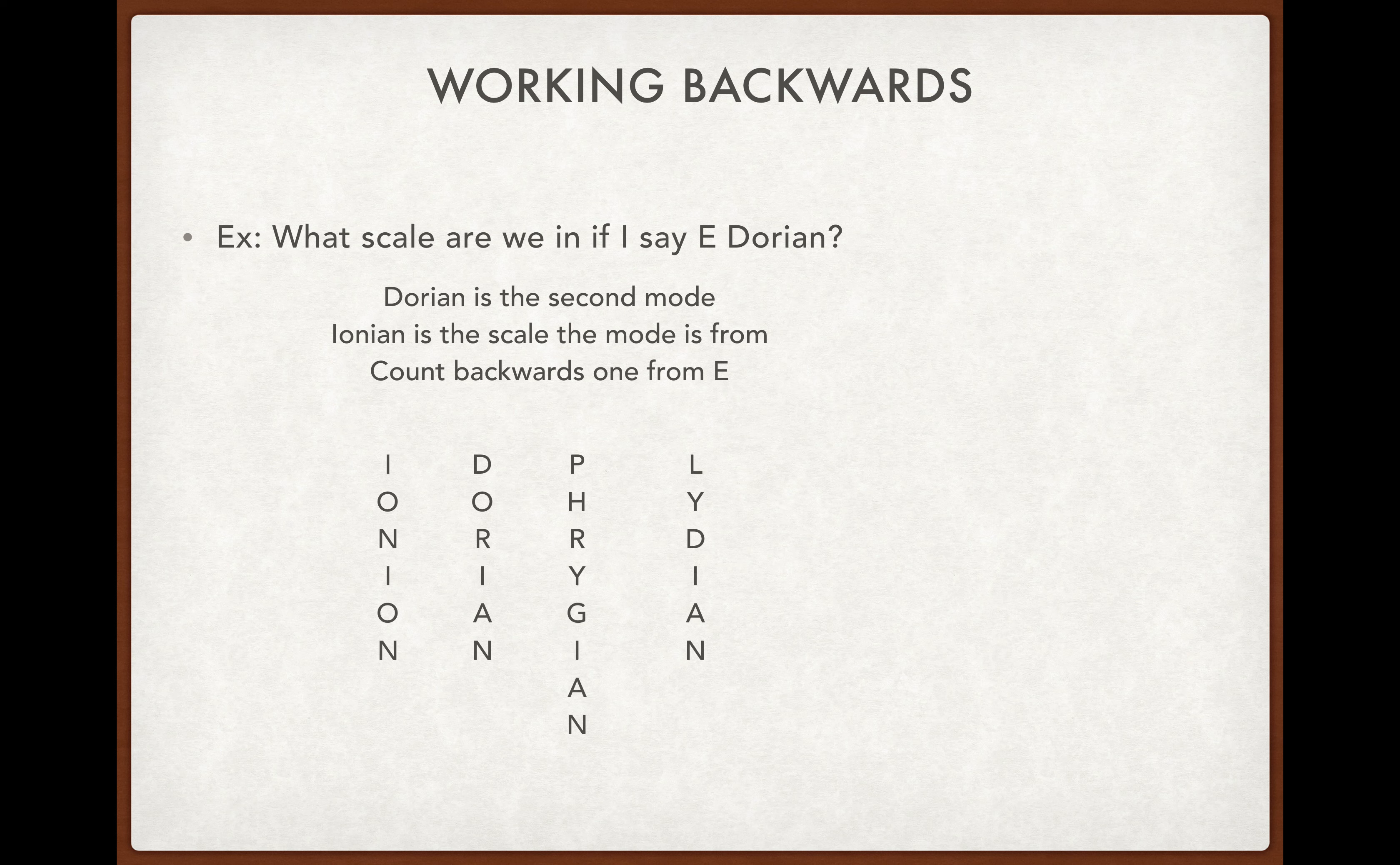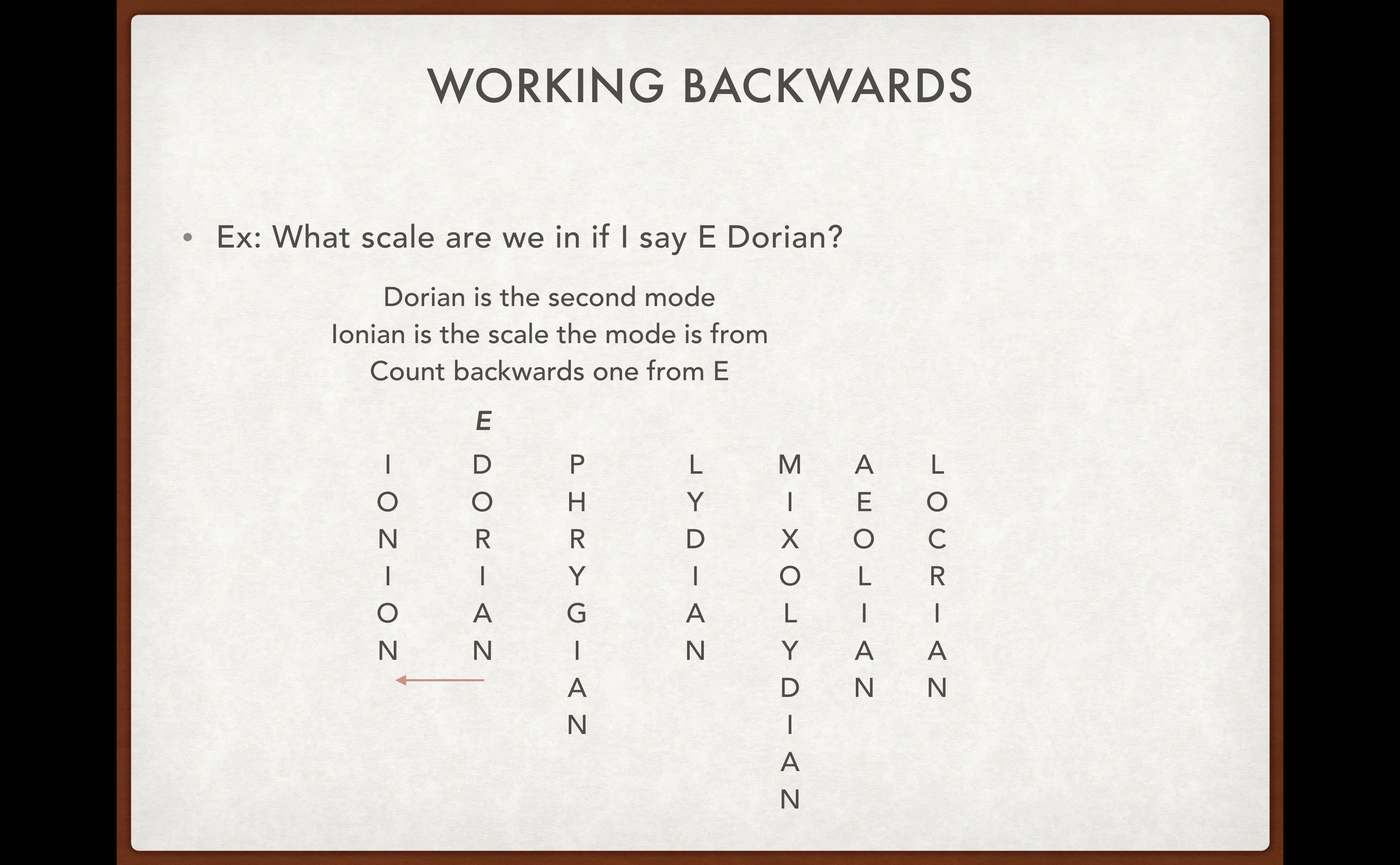If you remember all the different modes, and we put E Dorian right over E, then if we want to go to Ionian and figure out the major scale, we have to go back one. What comes before E? That's correct, it's D. Therefore, if I say E Dorian, that means we are in the D major scale.